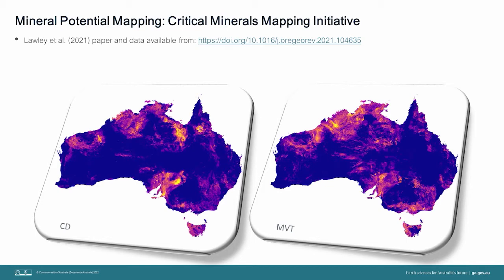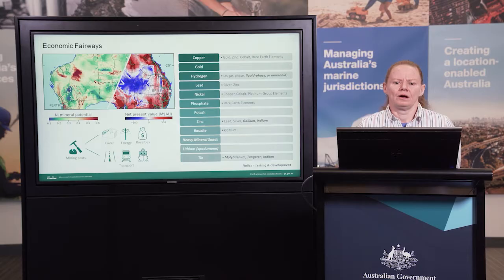The results of this mineral potential mapping work are available for download as both a journal paper and an accompanying dataset, freely available as an open access publication from the link on the slide. It is also important to note that this mineral potential mapping work included analysis of the relationship between individual input maps and non-mineral deposits, which helped to guide decisions around which maps to include as spatial proxies for different mineral systems processes, as well as the parameters that should be used to make the input maps in the first place.